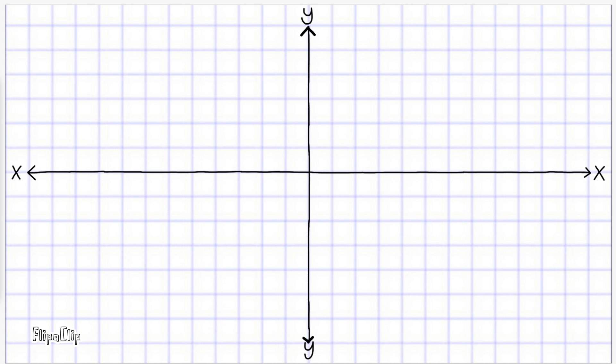Let's use this graph to get a visual illustration of this concept. Let's start with a single point at the origin. Its coordinates would be zero for the x coordinate and zero for the y coordinate.